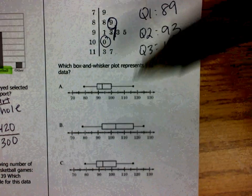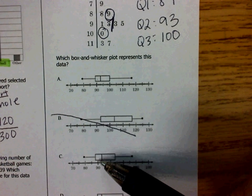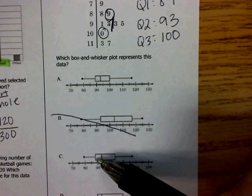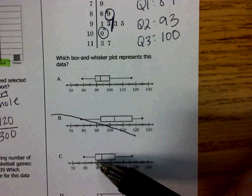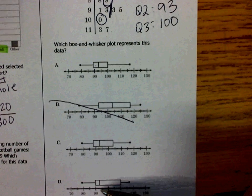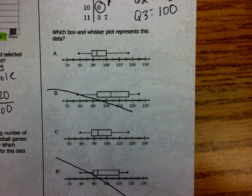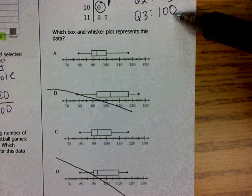B is not, so I crossed that one out. C might be close to 89. It looks like it might be 87, though, so that's a possibility. D, quartile 1 is right around 90, so I know it's not D. So I just have to check quartile 2 and quartile 3.